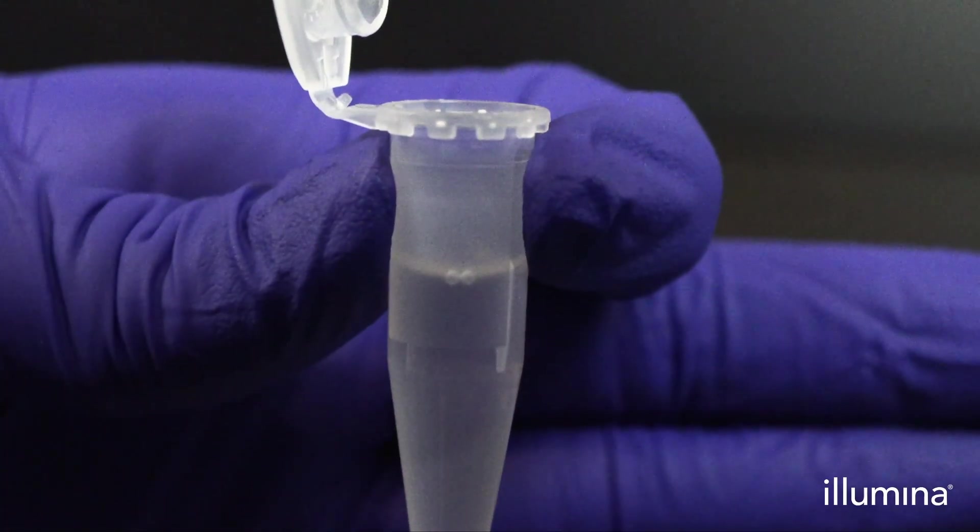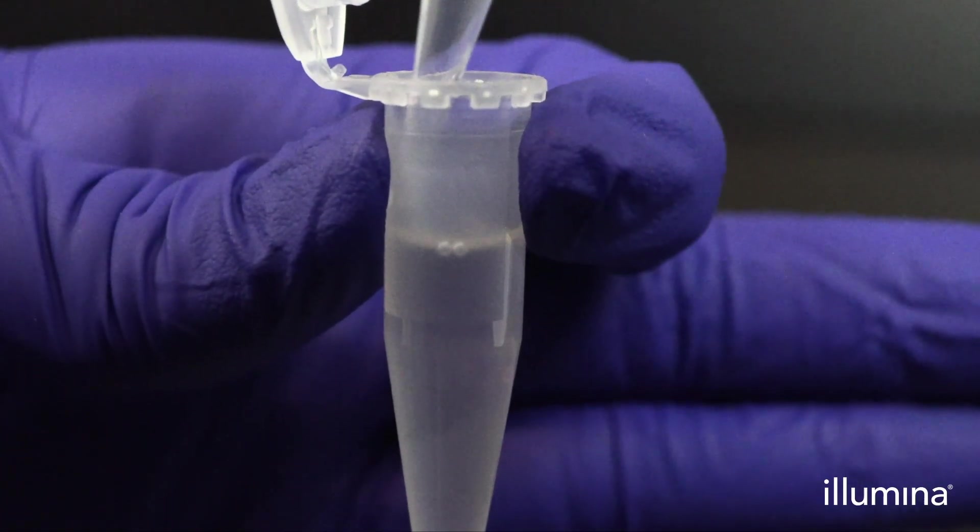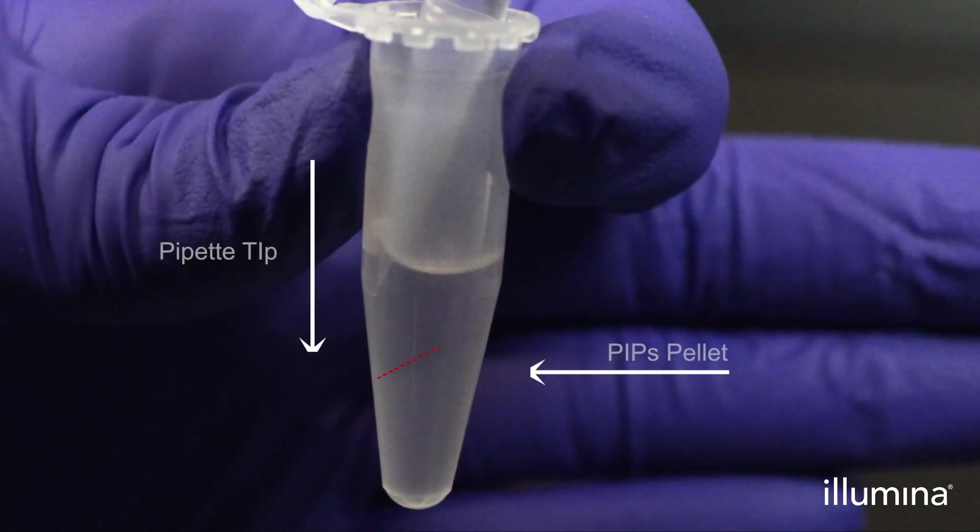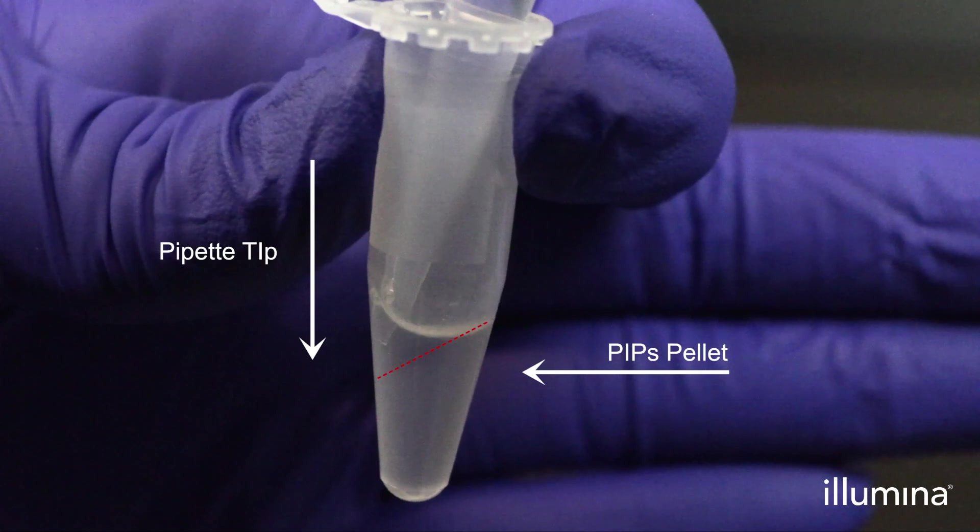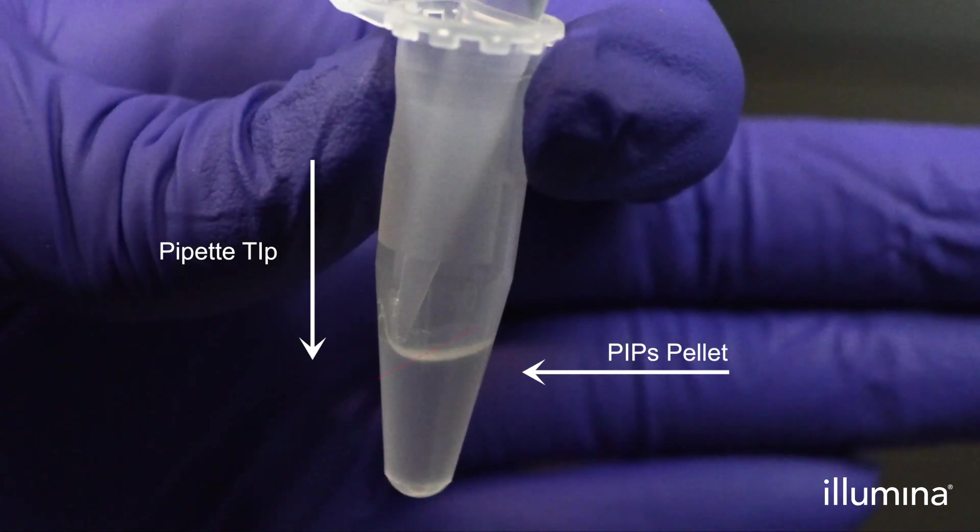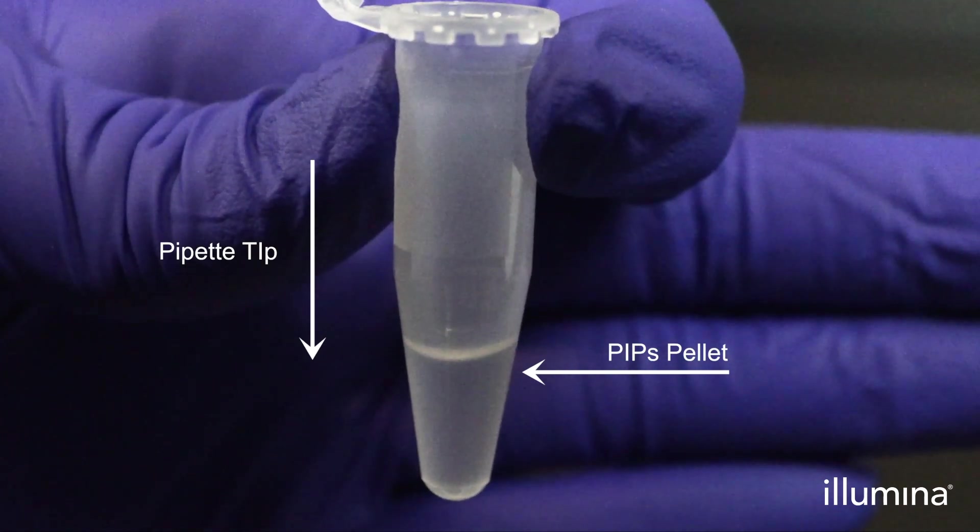Next, aspirate the calculated wash buffer to remove to leave 250 microliters desired remaining sample volume while being careful not to aspirate pips. This is critical to ensure proper volume regulation of the sample for mixing with the RT-MasterMix. Users can now proceed to reverse transcription.